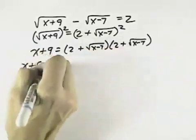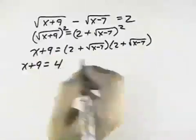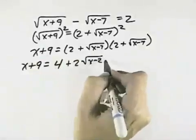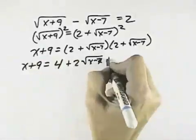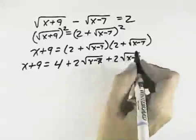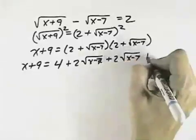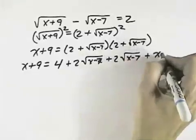I'll have x plus 9 on the left. On the right, I'll have 2 times 2 is 4, and then I'll have plus 2 times the square root of x minus 7, plus another 2 times the square root of x minus 7, and then x minus 7 times x minus 7, both under the square root signs, cancel the square roots leaving just x minus 7.